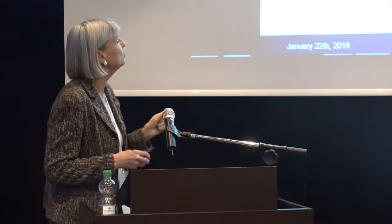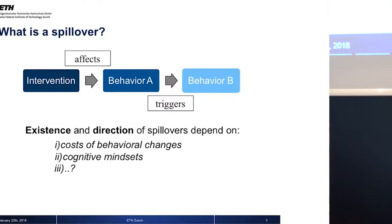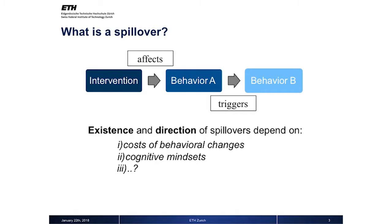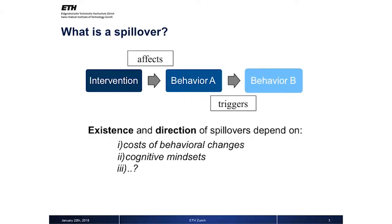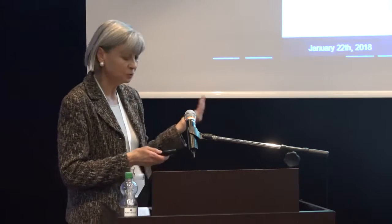I briefly want to explain what we understand by spillovers. We first have one intervention that is thought to affect behavior in one specific area — for instance, making people save more on electricity. That might change behavior A, meaning people may indeed save on electricity. But this electricity saving may also trigger an effect for behavior B, such as water usage or recycling. We are interested in the existence and direction of these spillover effects, and we suppose that the cost of behavioral changes in area A, the cognitive mindsets of people, and many other factors may play a role.